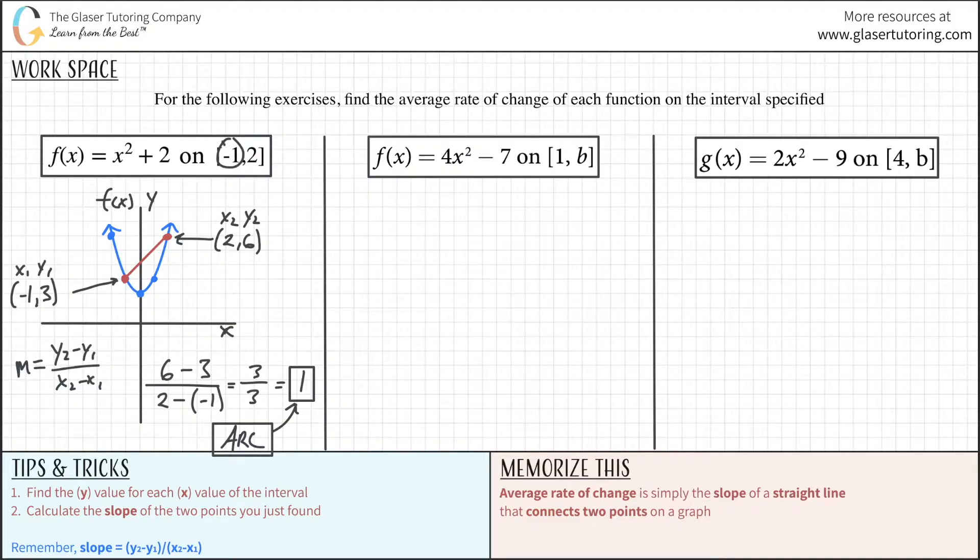All you have to do is take this x value, plug it in, find the corresponding y. That would have given you this coordinate. Then take this x value, plug it in, then find its y value. That would have given you this coordinate. And then, now that you have your two coordinates, just plug them into your slope formula. And you're good to go. That's basically the steps that I have outlined over here for you. Find the y value for each x value of the interval, and then calculate the slope of the two points you just found.